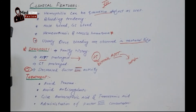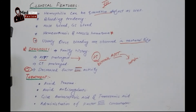Another is treatment. How will we manage this patient? The most important thing is to avoid trauma. The babies should not go to aggressive sports or engage in activities where even a minor injury, which can even kill them, is possible. It is better to avoid even small traumas.